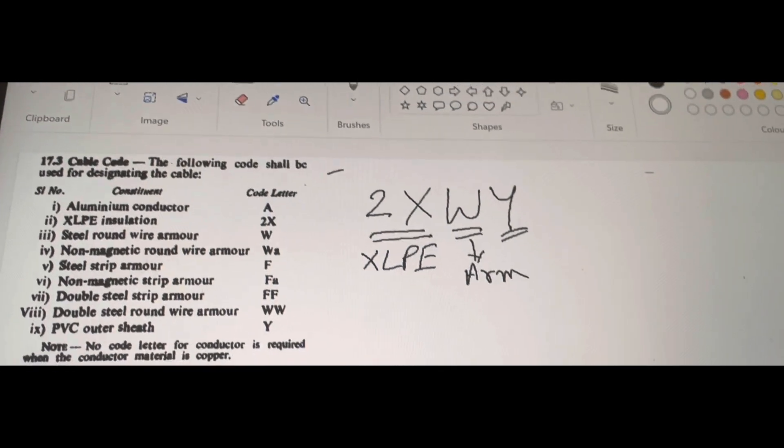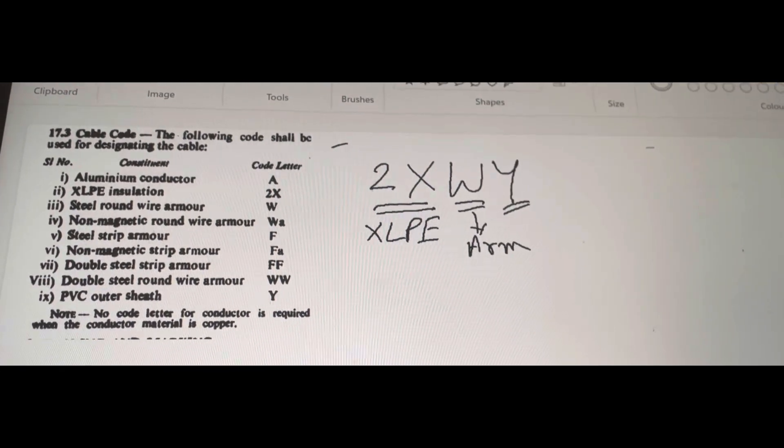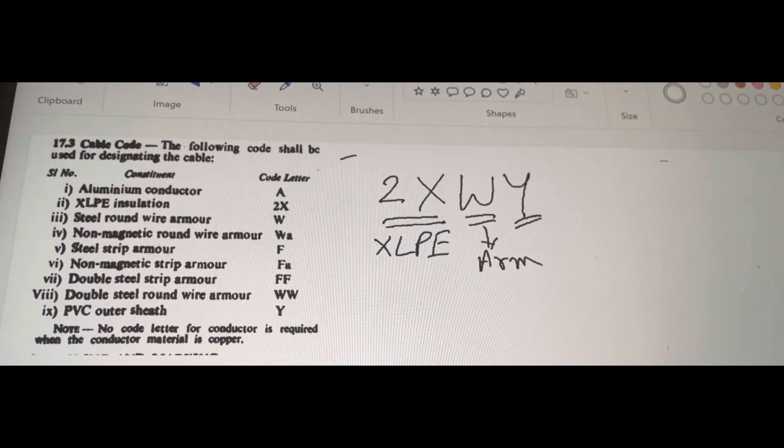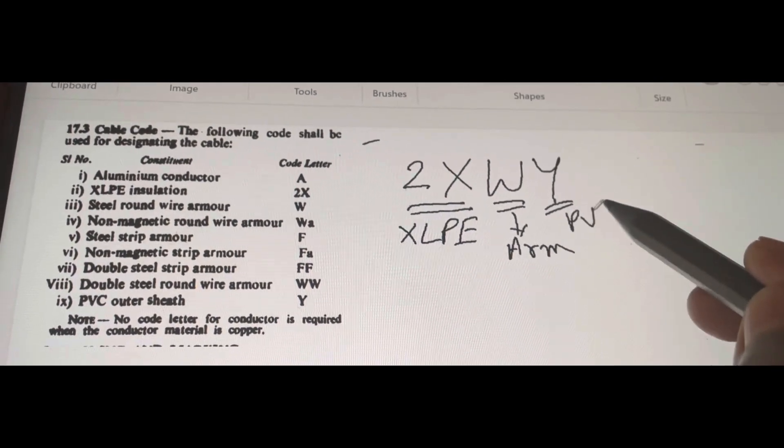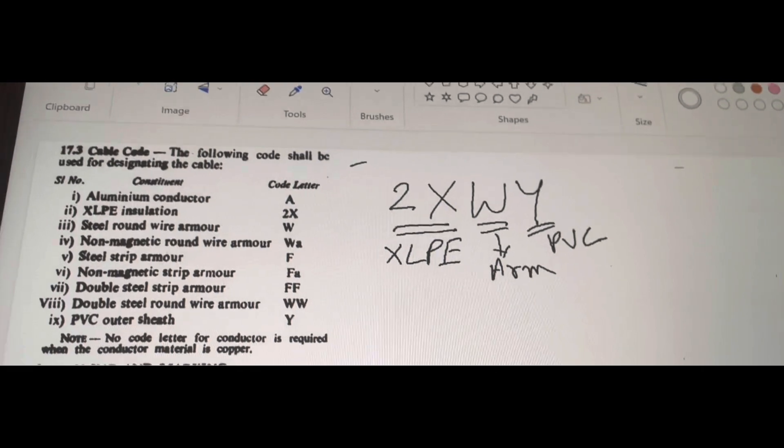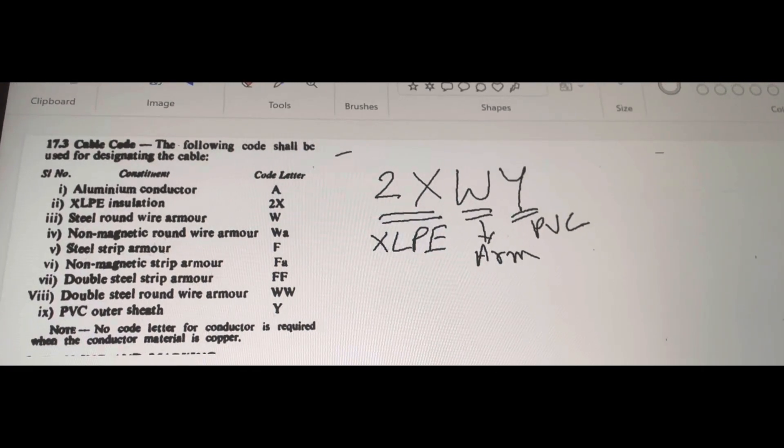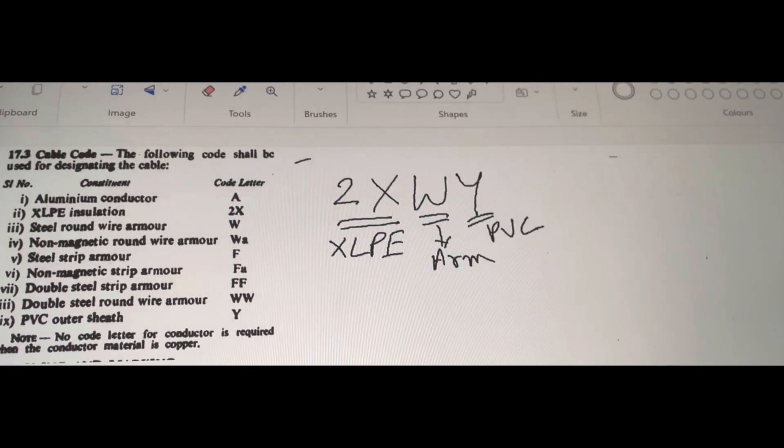indicates that there is a PVC outer sheath. The outer sheath is made up of polyvinyl chloride material. This indicates there is a PVC outer sheath. So, this is the meaning of this particular code.